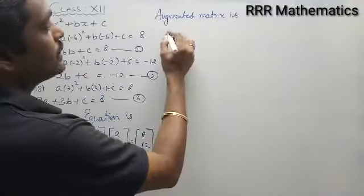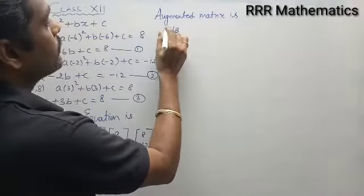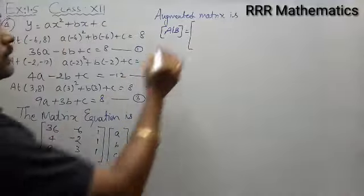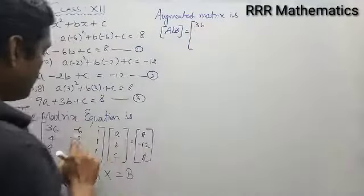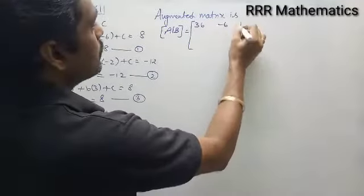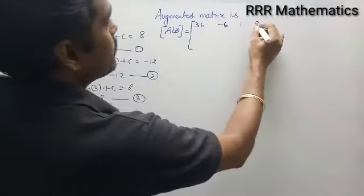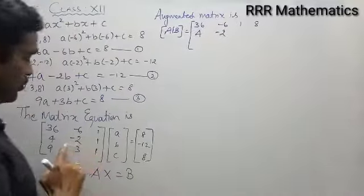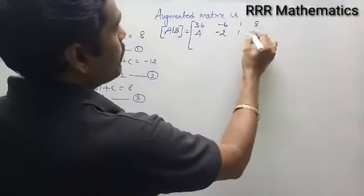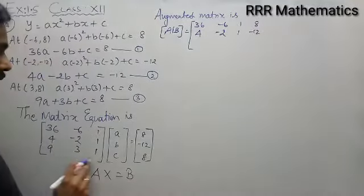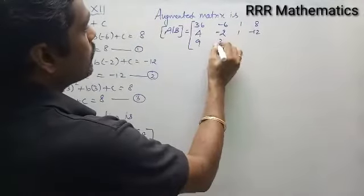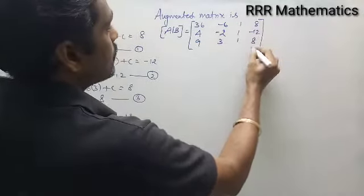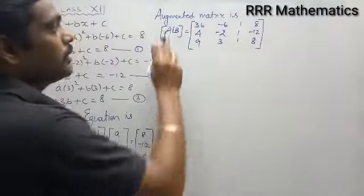Augmented matrix — write A and B together: [36, −6, 1 | 8], [4, −2, 1 | −12], [9, 3, 1 | 8].